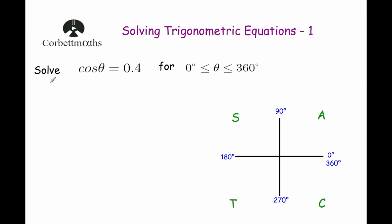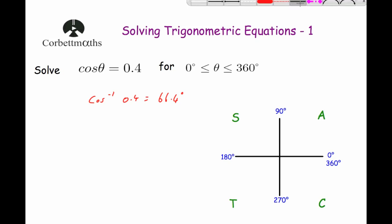Our first question says: solve cos θ = 0.4 for angles between 0° and 360°. We're going to work out the inverse cos of 0.4 to begin with. We do shift cos of 0.4, and we get that's equal to 66.4° to one decimal place. So that means in our first quadrant, our angle is going to be 66.4°.